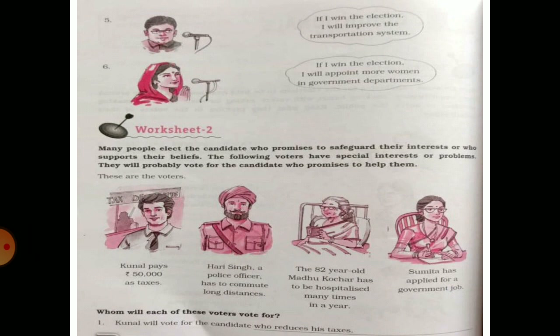Here are the people who want to cast their vote. They are the voters and they have to select the right candidate who promises to help them. Kunal pays Rs. 50,000 as taxes, so Kunal will vote for the candidate who reduces his taxes. Next, Hari Singh — a police officer who has to commute long distances — Hari Singh will vote for the candidate who improves the transportation system. Madhu Kochar has to be hospitalized many times in a year, so Madhu Kochar will vote for the candidate who provides free hospital care for the elderly. Sumita has applied for a government job, so Sumita will vote for the candidate who appoints more women in government departments.